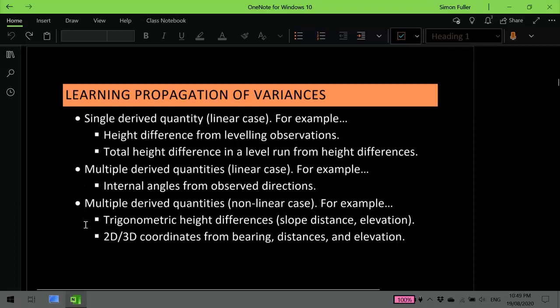And finally, the trickiest case of all, how do we work out the variance of multiple derived quantities from our measurements if the relationship is non-linear? Because this is what we tend to do more than anything else. So there's some examples there as well.